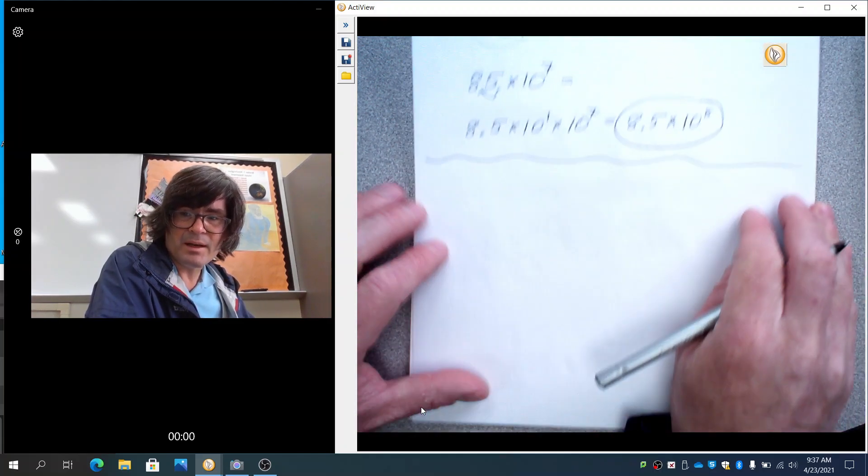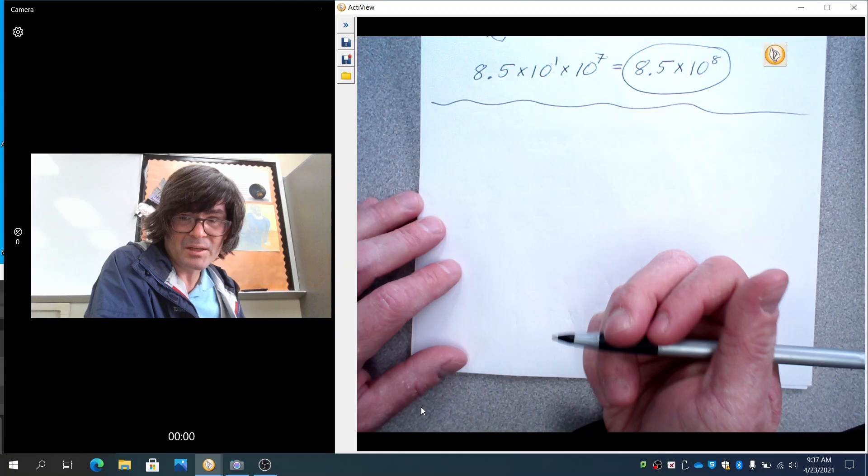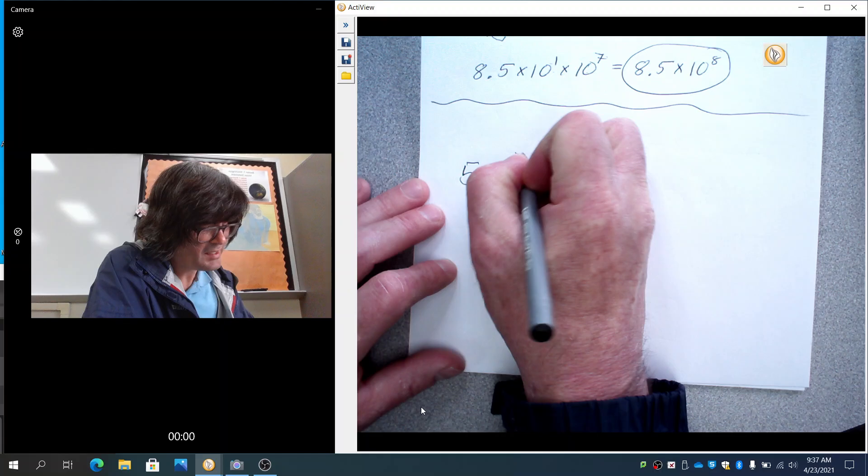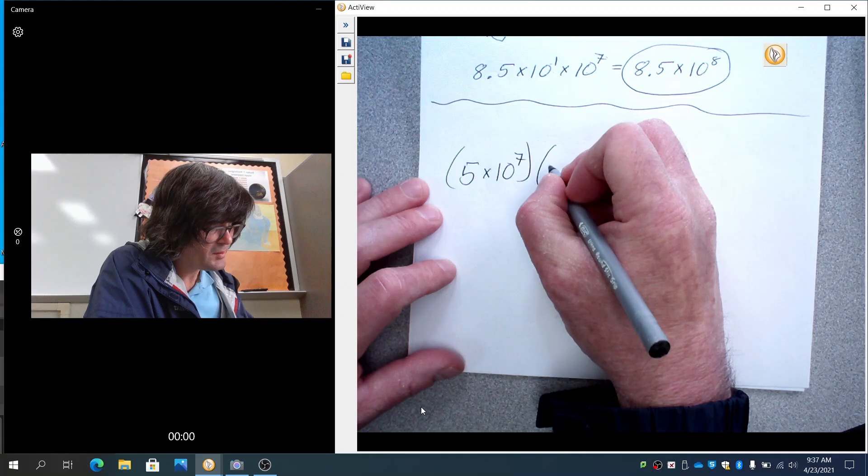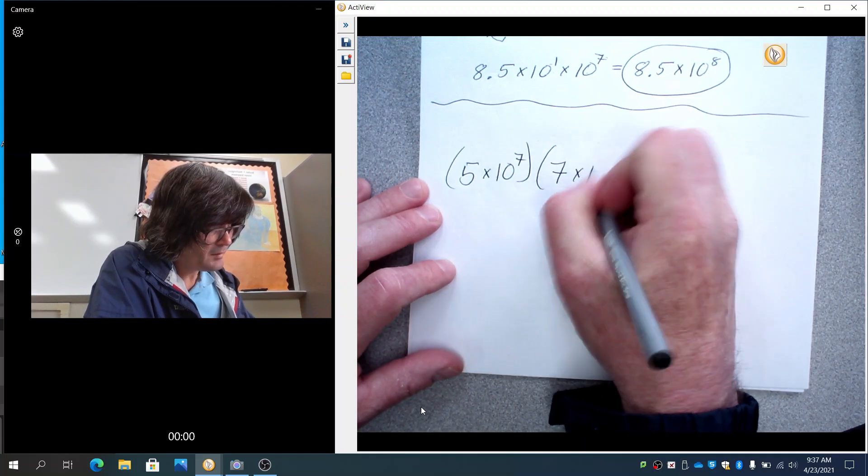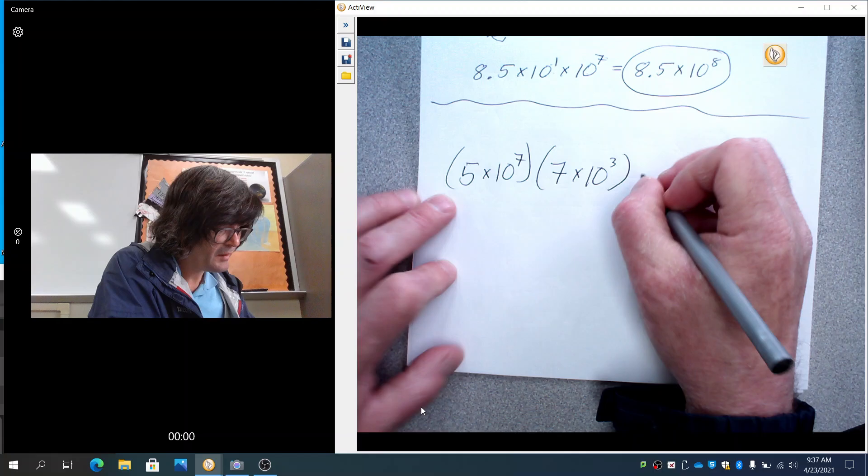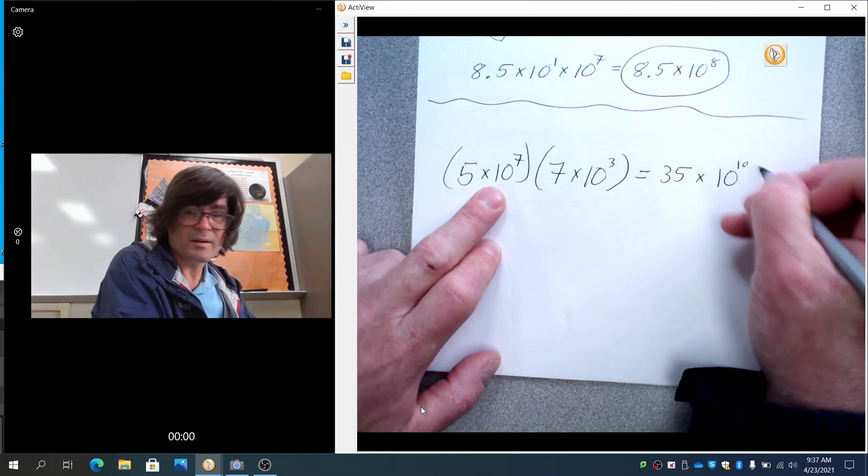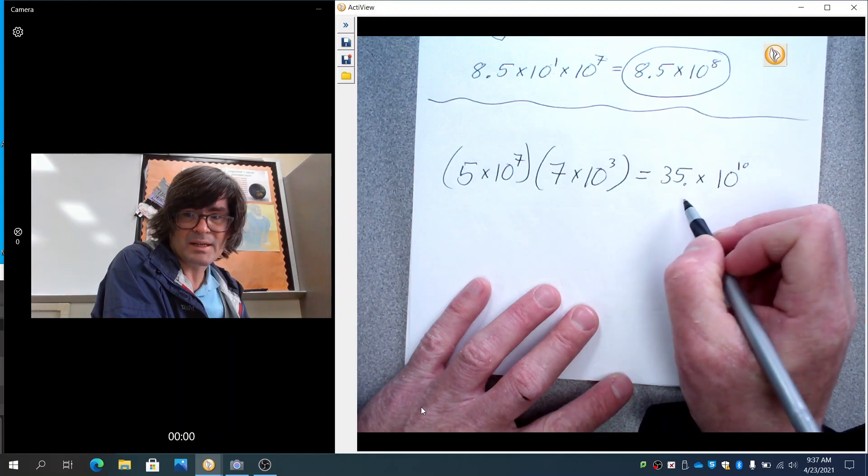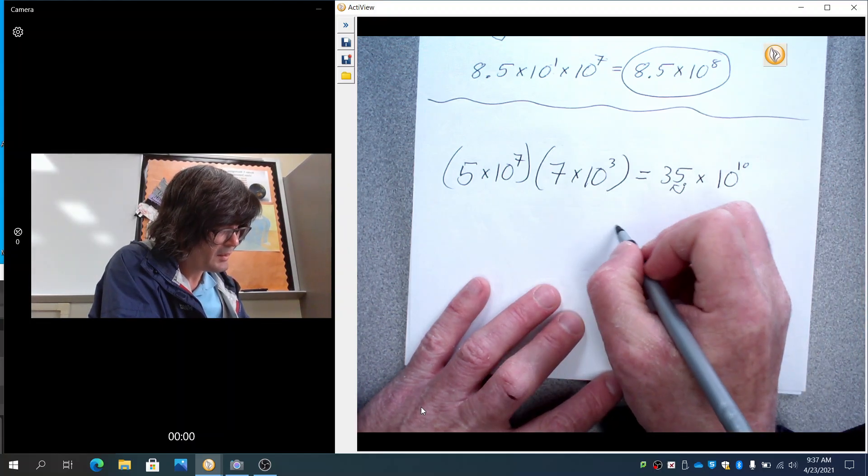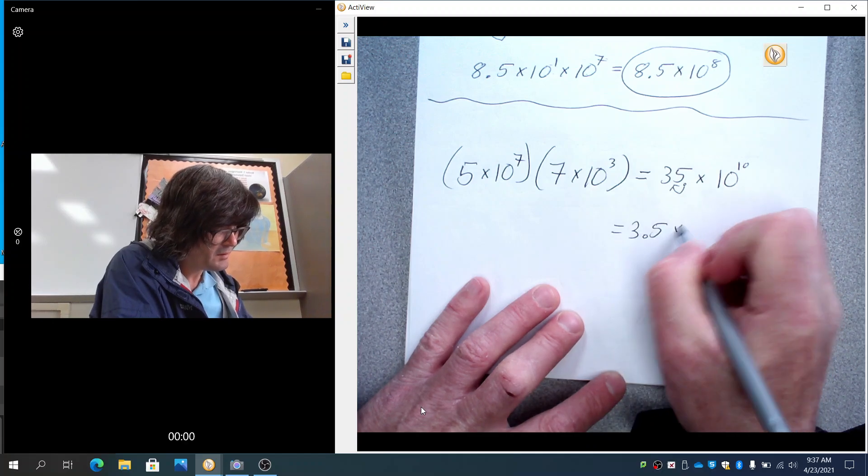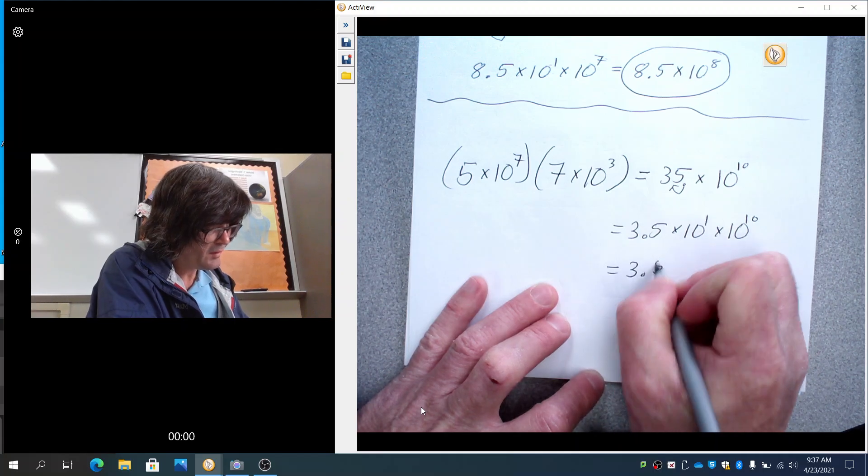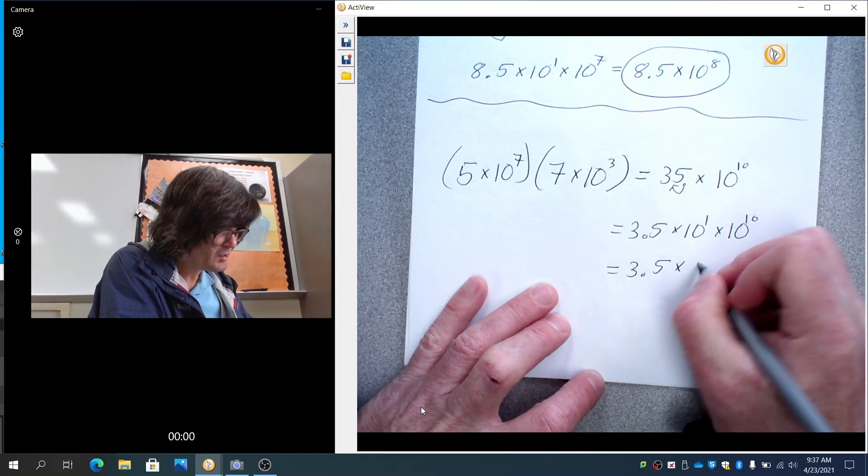Okay. Last thing here is multiplication. Multiplication works just like division. You multiply the front numbers. You multiply the tens. If you had 5 times 10 to the seventh times 7 times 10 to the third, you're going to multiply the 5 and the 7, that's 35. And then 10 to the 7 times 10 to the third is 10 to the 10th, a very large number. And notice that this is not proper scientific notation. So move this over 1 and you're going to have 3.5 times 10 to the 1 times 10 to the 10. And that finally will be 3.5 and that's 10 to the 11th power because you add the 1 and the 10.